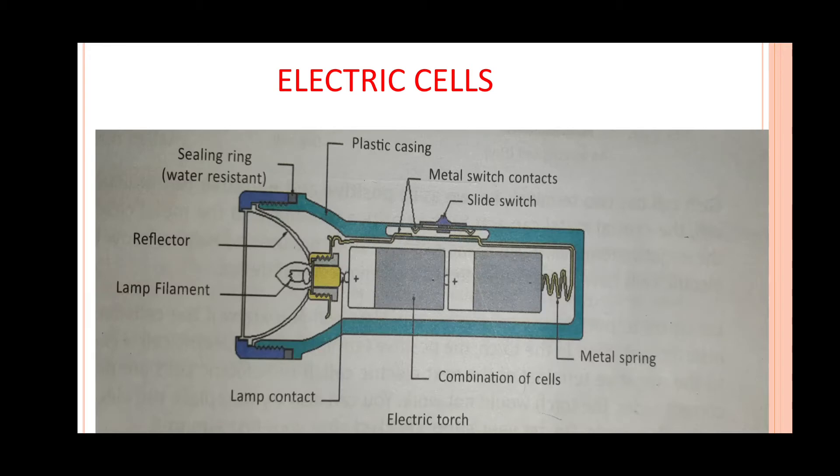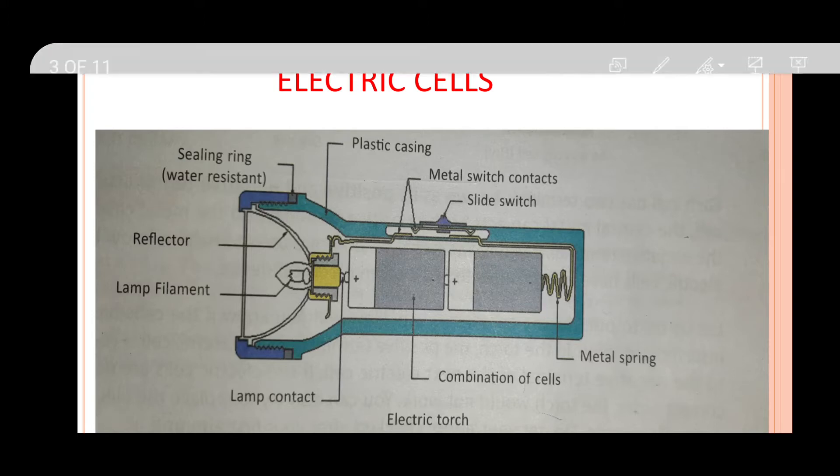The very first topic of your chapter is electric cells. One day, Rohit and Reena were playing with their father. Suddenly the electricity supply went off. Their father took out an electric torch from the nearby drawer and switched it on. There was some light in the room and they could find their way. The children were very excited and wanted to know how this electric torch works.